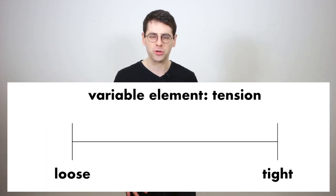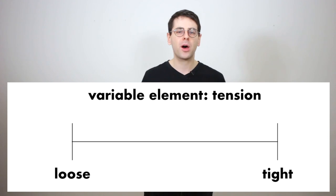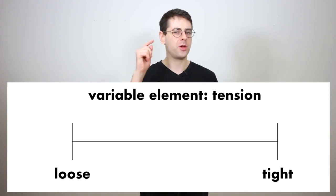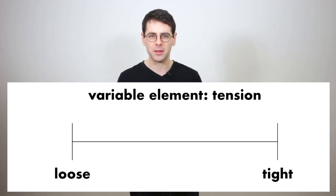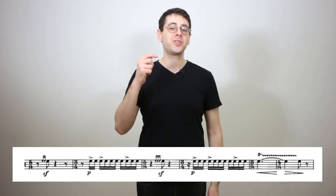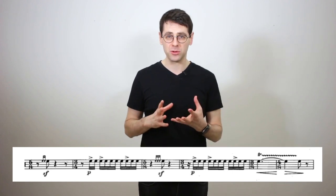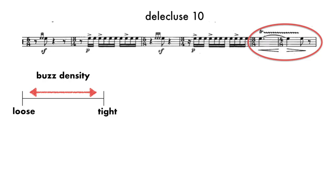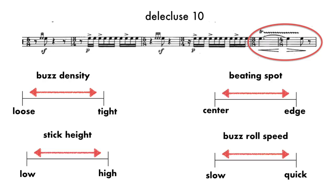And I suddenly can't play even because there's no way I can control that tension. Tension is a variable element of your snare drum stroke. You use a certain amount of tension in every single stroke, whether it's singles, doubles, buzzes, anything. Every single time you play a note, you decide exactly how much tension you want to use.